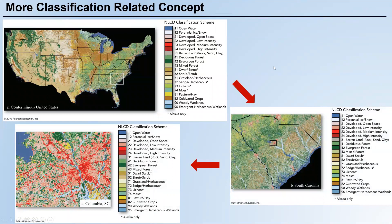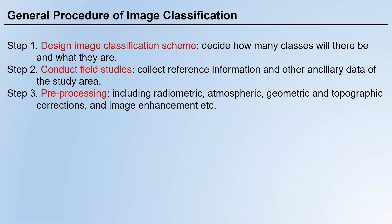This is a typical example of a national government-administered land use and land cover classification scheme. Now let's get to the core of this lecture: different steps and methods of image classification. Let's talk about general steps. Step one is to design the image classification scheme — decide how many classes there will be and what they are.